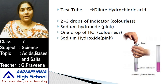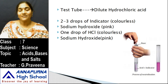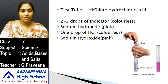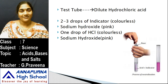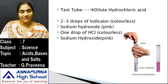We add two or three drops of the indicator phenolphthalein to the test tube. When you add phenolphthalein to an acidic solution — here we have taken hydrochloric acid — it changes color and becomes colorless. Phenolphthalein remains colorless in an acidic solution.